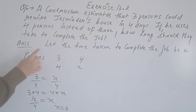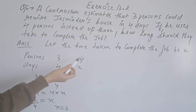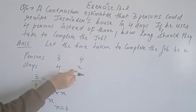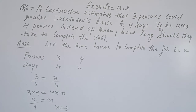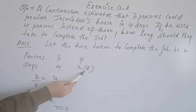Let the time taken to complete the job be x. The contractor estimated 3 persons are needed. Now 4 persons are used instead of 3. Since this is inverse proportion, 3 divided by 4 equals x divided by 4. So 3 × 4 = 12, and 12 divided by 4 gives 3. Hence 4 persons will complete the job in 3 days.